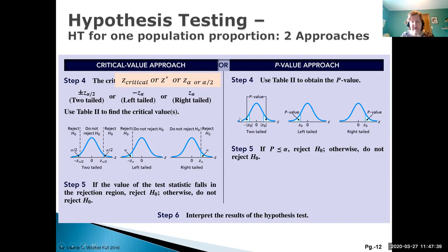If the value of the test statistic falls in the reject region, we reject H-naught; otherwise we do not reject it. For the p-value approach, the p-value is the area under the curve to the left for a left-tail test, to the right for a right-tail test, or the combined two-tail area for a two-tail test. We compare that p-value to our alpha value: if it's less than or equal to alpha, we reject H-naught; otherwise we don't reject it.